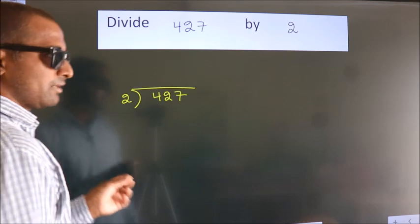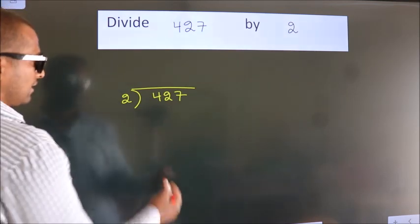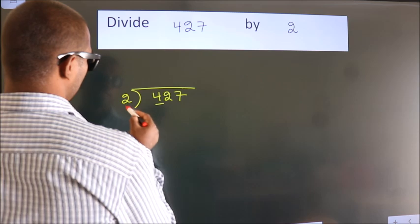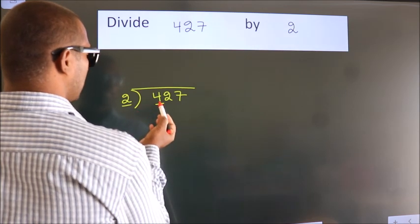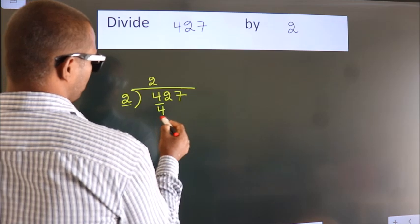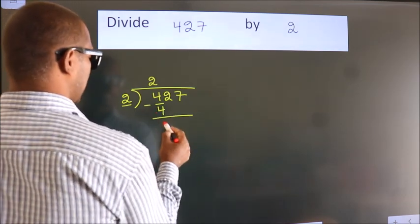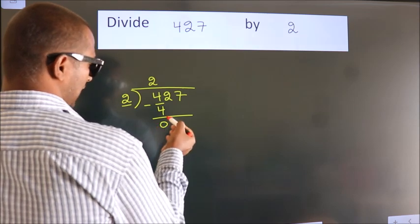This is your step 1. Next, here we have 4, here 2. When do we get 4? In 2 table, 2 2s, 4. Now, we should subtract, we get 0.